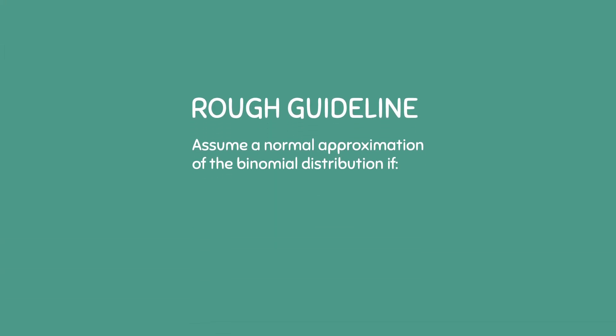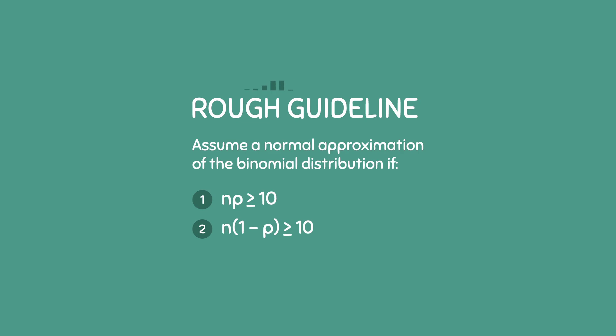Because of this, we can make a rough guideline. We can assume a normal approximation of the binomial distribution if it follows two conditions: the first condition is that n times p must be greater than or equal to 10, and the second condition is that n times 1 minus p is also greater than or equal to 10. Both conditions must be satisfied. Note that this is a rough guideline because some people use 5 instead of 10, so you should check with your professor or textbook to see what guideline they are using.